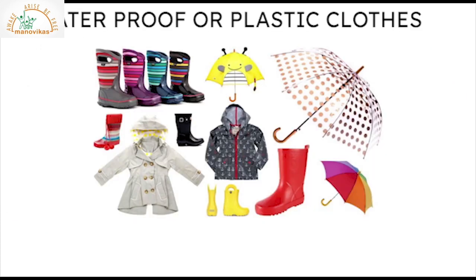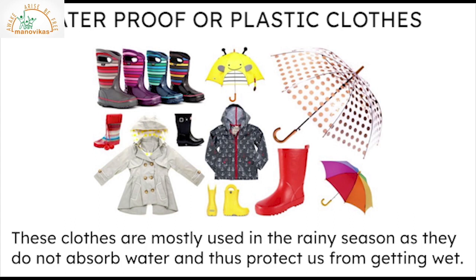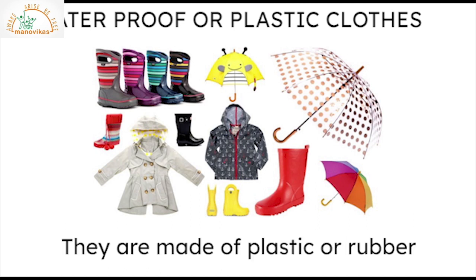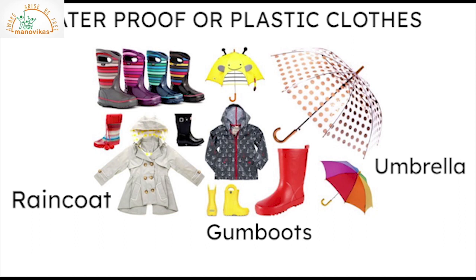Waterproof or plastic clothes: these clothes are mostly used in the rainy season as they do not absorb water and protect us from getting wet. These clothes are made from plastic or rubber. Examples include raincoats, umbrellas and gumboots.